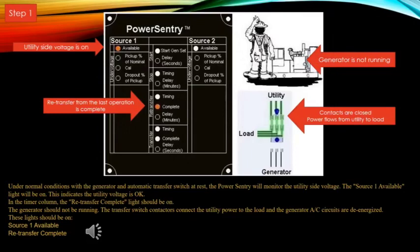Pause and look at the arrows: utility side voltage is on, re-transfer from the last operation indicates complete. You'll notice the generator is not running, and the contactors in green connect utility power to the load.